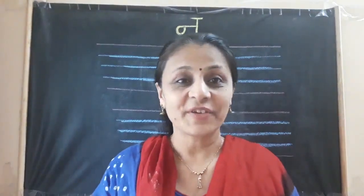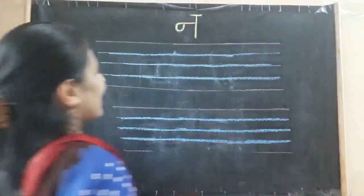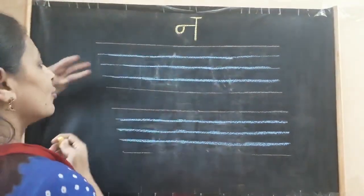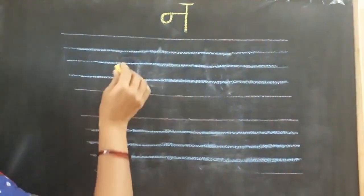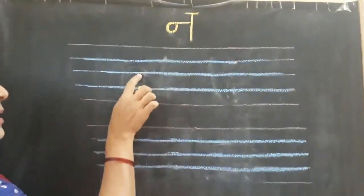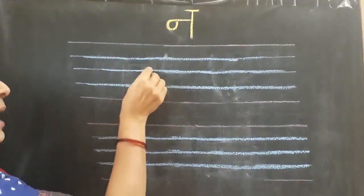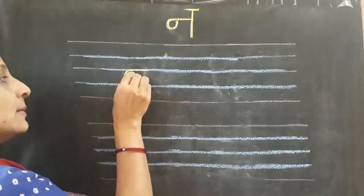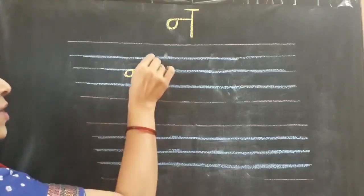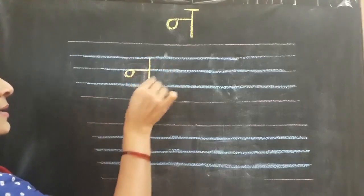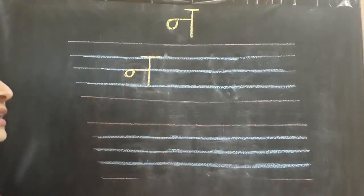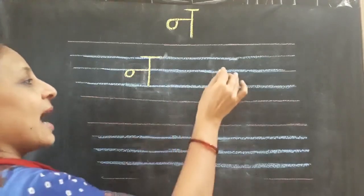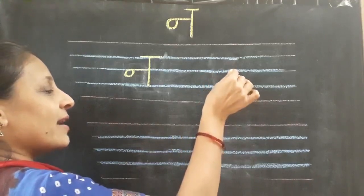Children, are we ready to write letter Na? Let's see on the board and pay attention. We are going to write in these three blue lines. I am going to draw one sleeping line and circle on the middle blue line, and one standing line, and sleeping line overhead. Isn't it very simple? You are going to enjoy while writing letter Na.